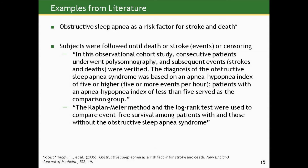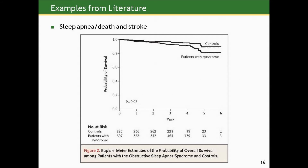Here's the Kaplan-Meier plot they published in the article. This is tracking the probability of survival — the sample proportion who remained stroke- and death-free. Those in the control group, people without sleep apnea, tended to do better than those with sleep apnea over the six-year follow-up period. Notice they actually report on the graph, down towards the origin, p equals 0.02.